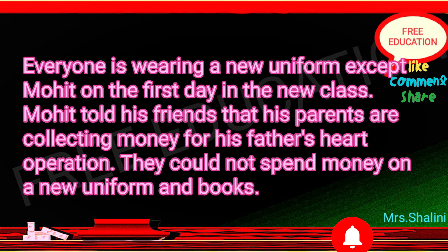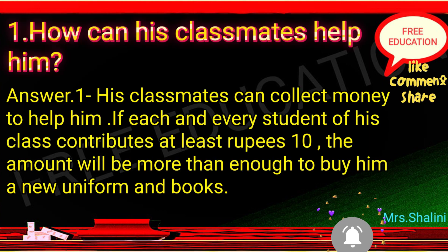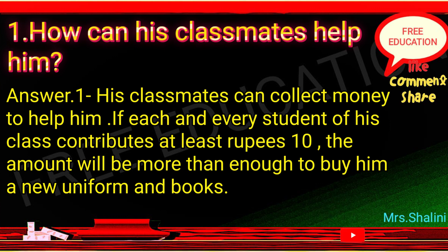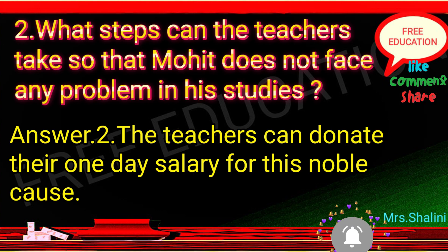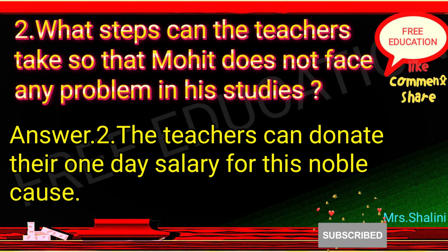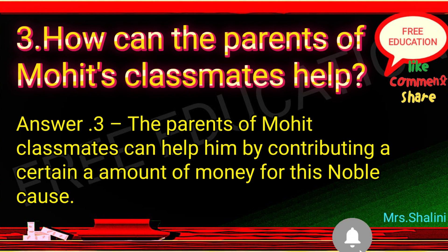Next are value-based questions. Everyone is wearing a new uniform except Mohit on the first day in the new class. Mohit told his friends that his parents are collecting money for his father's heart operation and they could not spend money on a new uniform and books. Question 1: How can his classmates help him? Answer: His classmates can collect money to help him. If each and every student contributes at least rupees 10, the amount will be more than enough to buy him a new uniform and books. Question 2: What steps can the teachers take so that Mohit does not face any problem in his studies? Answer: The teachers can donate their one-day salary for this noble cause. Question 3: How can the parents of Mohit's classmates help? Answer: The parents of Mohit's classmates can help by contributing a certain amount of money for this noble cause.